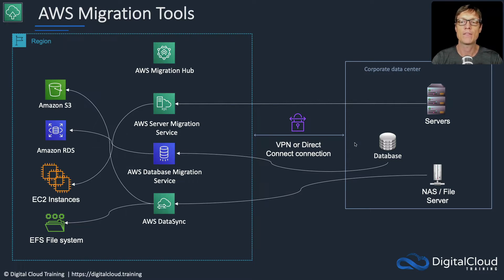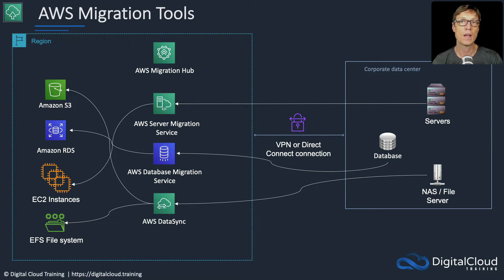On the right hand side, we have a corporate data center with some servers, a database, and some storage systems. Your data center is likely to be much more complex, with virtualized and physical servers, different types of databases, and file-based, block-based, or even object-based storage systems. Whatever you have, there's a way to get it across. In most circumstances, we'll want a virtual private network or even better a Direct Connect connection, so that we have consistent network bandwidth between our data center and the cloud. There are services we can use to transfer and migrate our systems across.